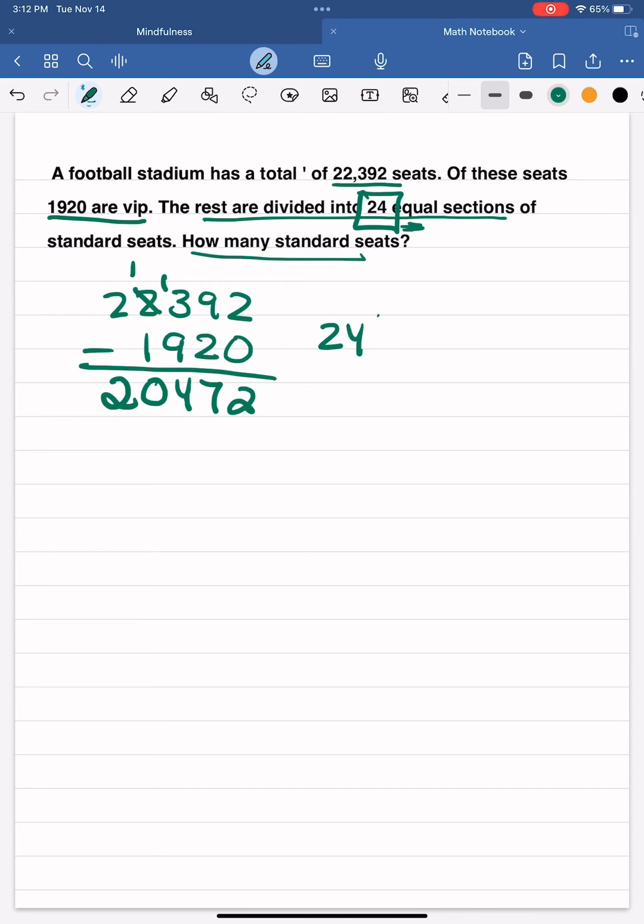Now, of those remaining seats, which are standard seats, I will be dividing those seats into 24 equal sections. So this is when I'm going to use that long division algorithm. Remember what that is?